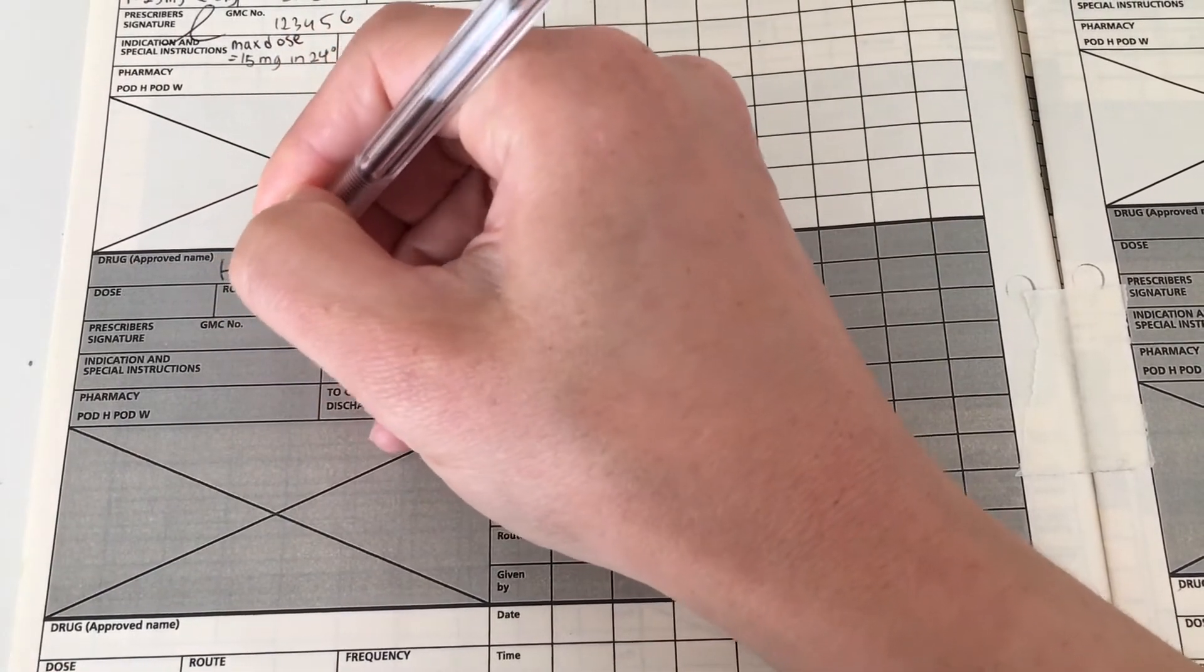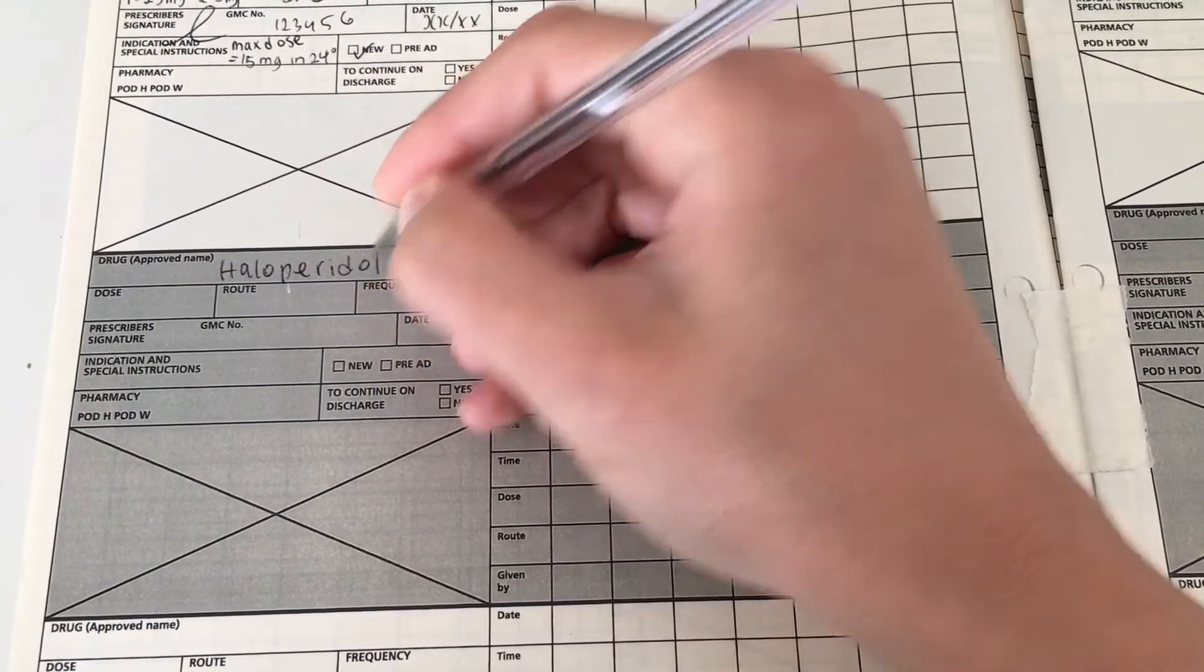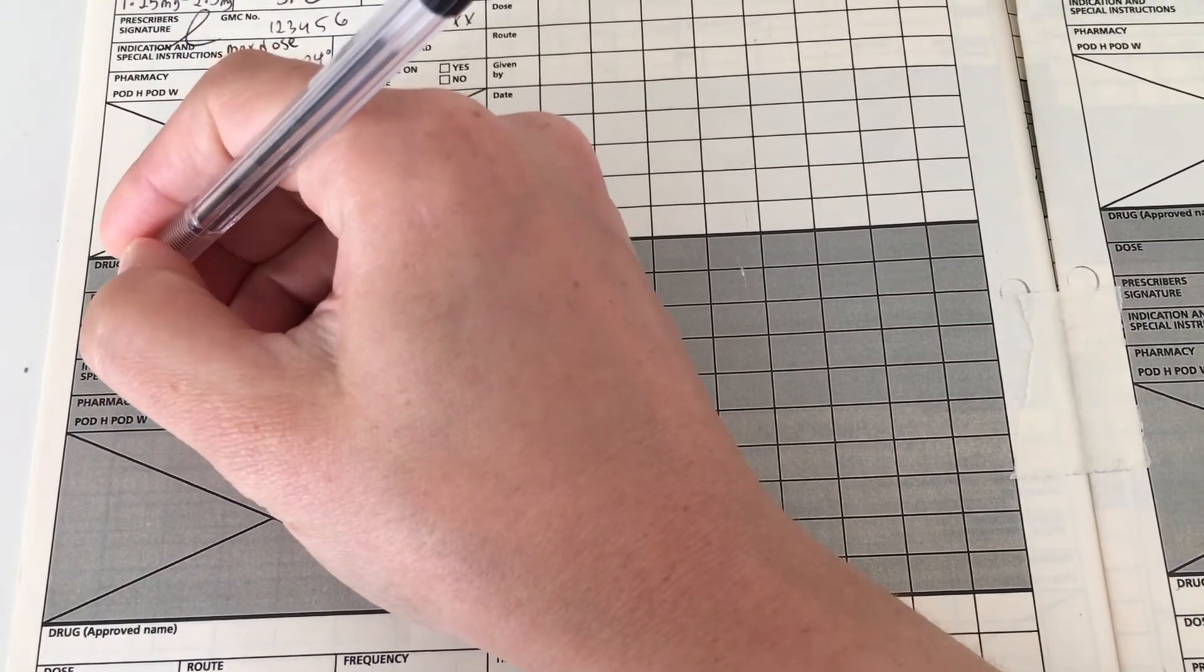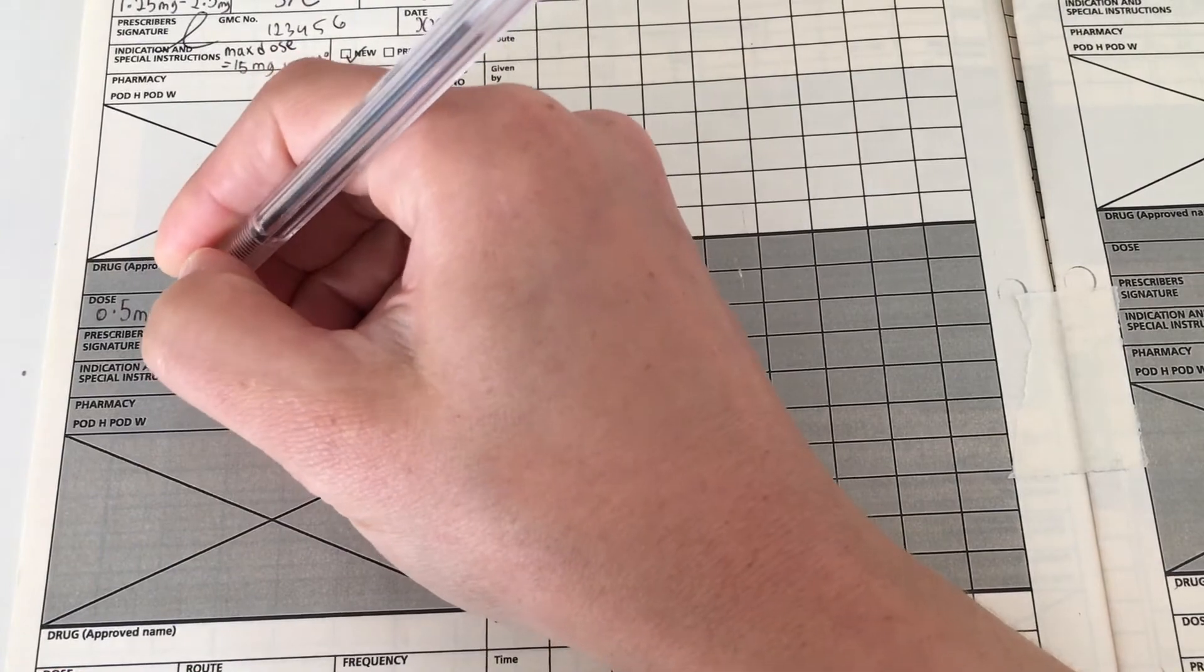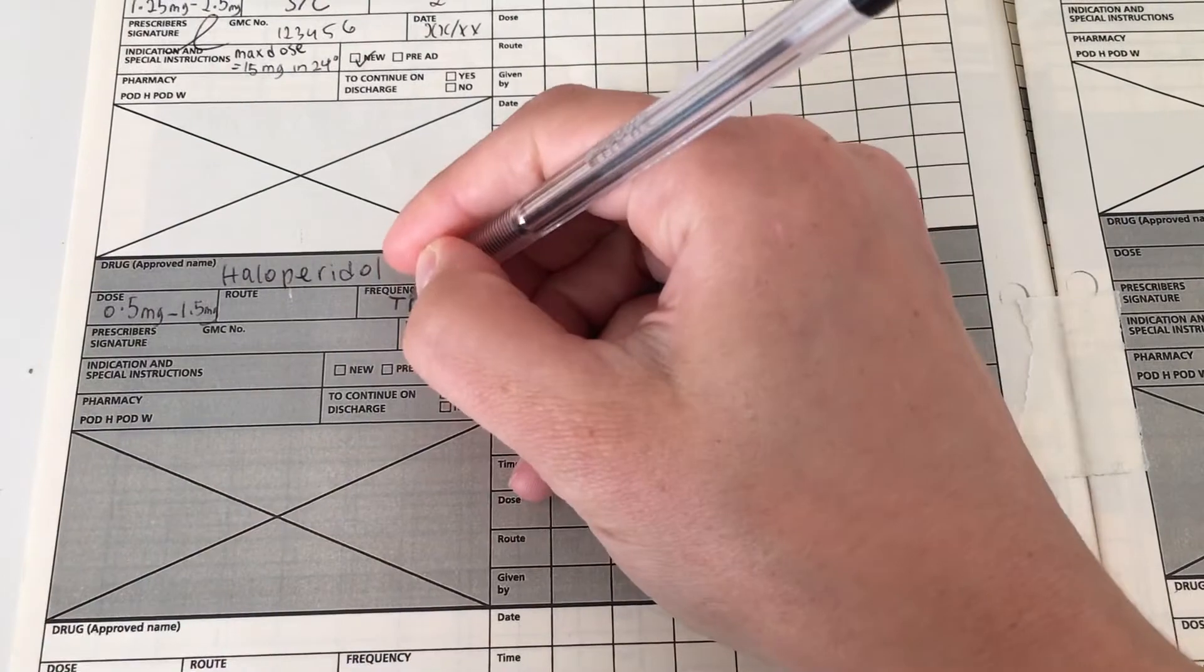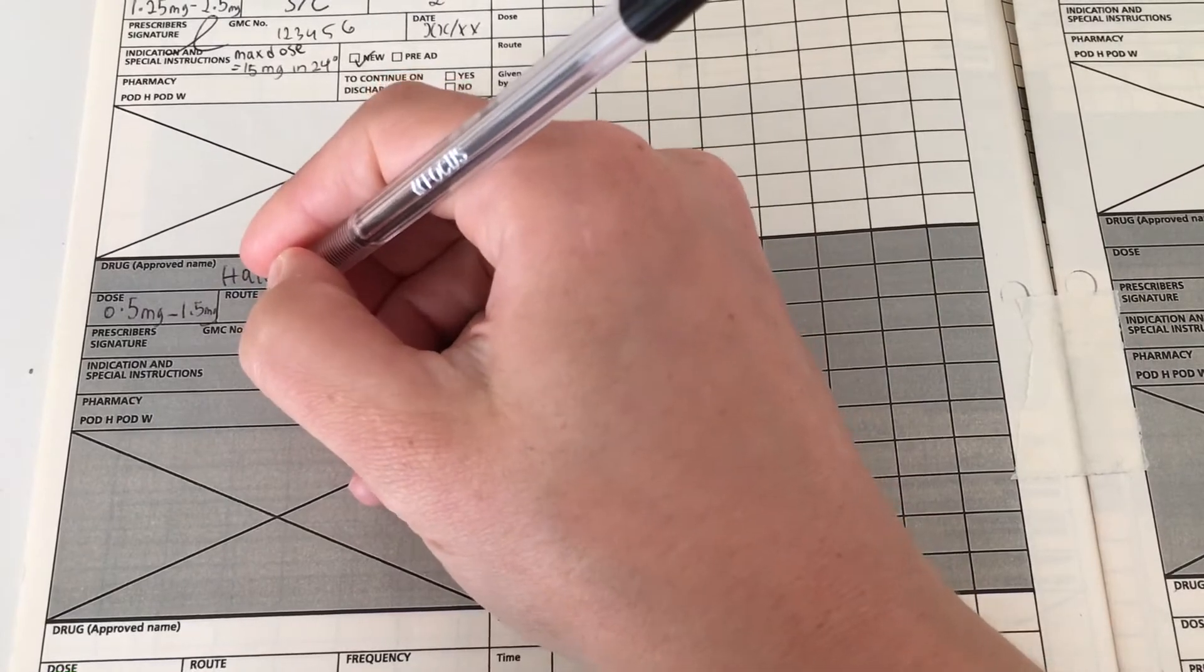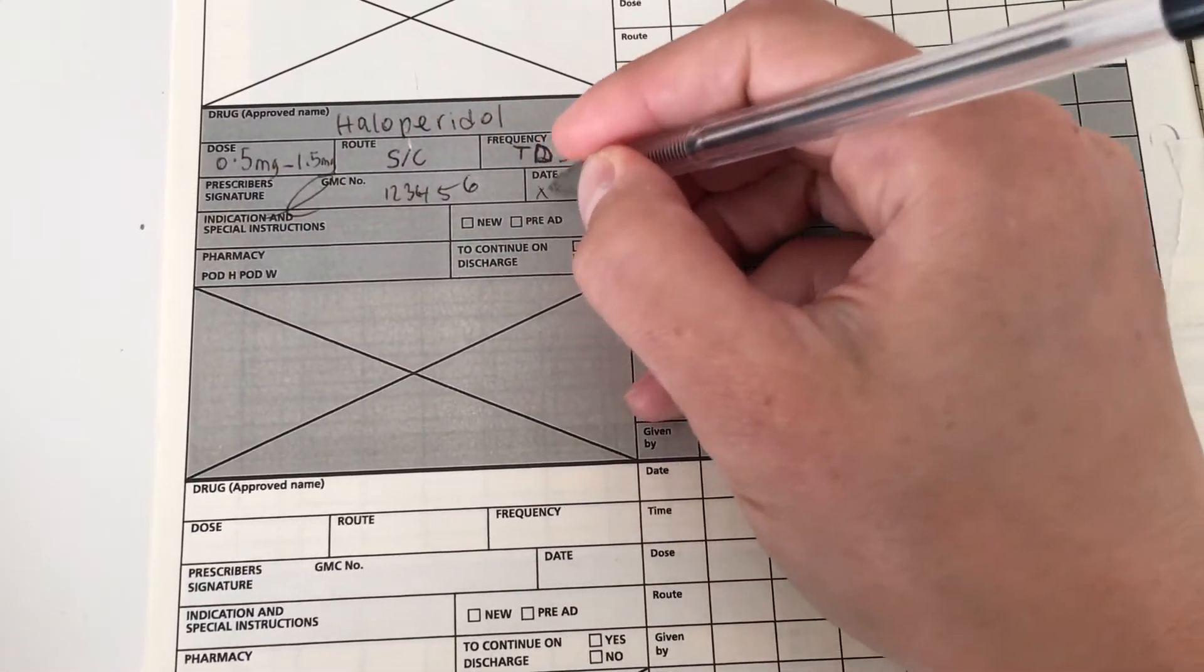So the next medication is haloperidol and this is given for agitation, confusion and even nausea. Here the dose is 0.5 milligrams to 1.5 milligram. The route is subcut and you can give this three times a day, so TDS. It's a new medication so tick that new box, sign, date and GMC number as usual. It's always helpful to put the maximum dosage for these palliative medications. So here I've put 4.5 milligrams in 24 hours.